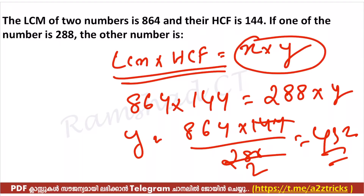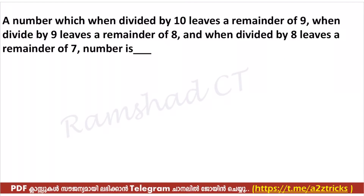If you have a question, the answer follows the same method. A number which when divided by 10 leaves a remainder of 9 — 19 is a system. Here I am saying 19 is a system.